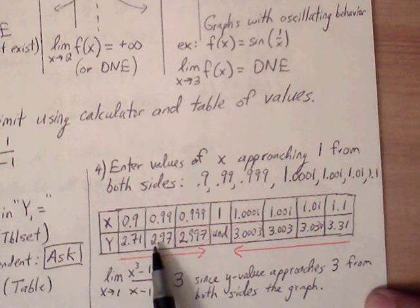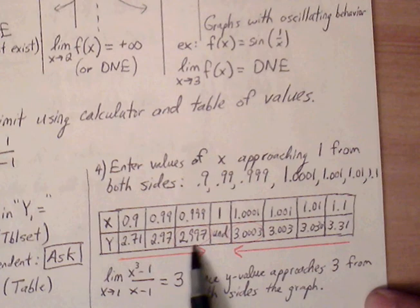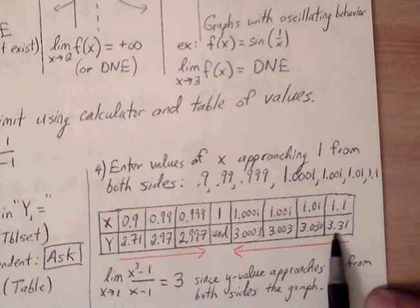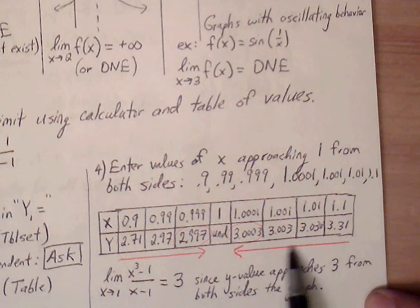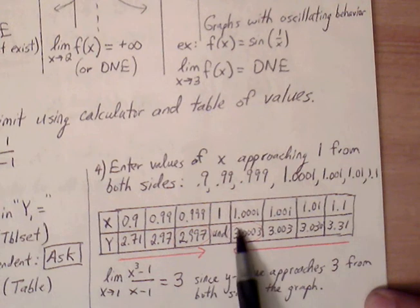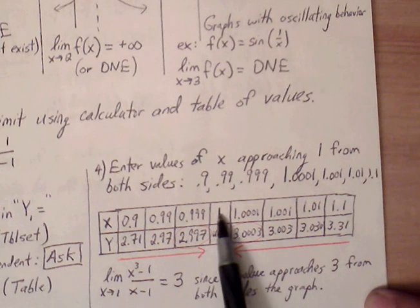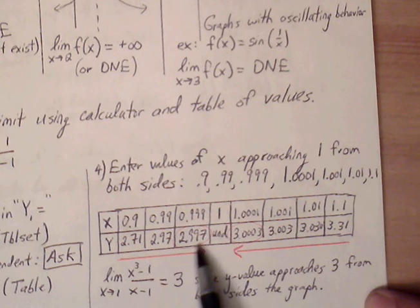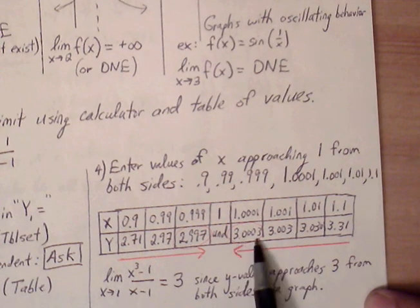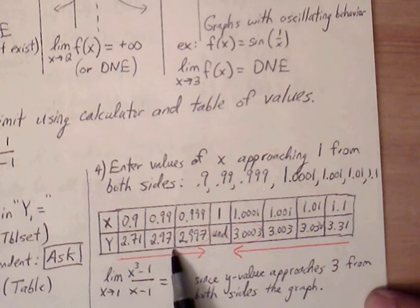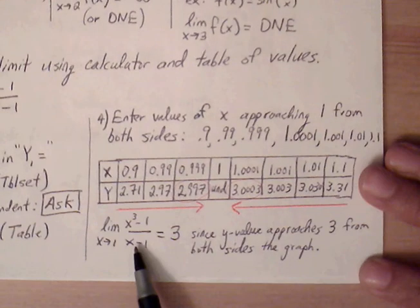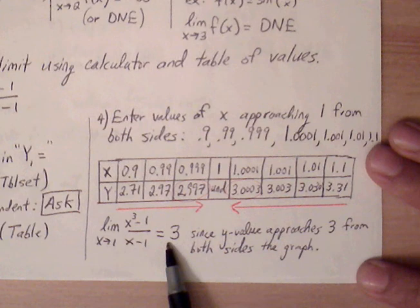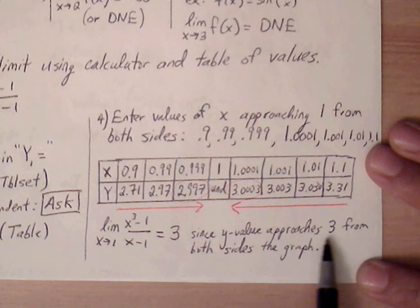The y-values from the left are 2.71, 2.97, 2.997 — approaching 3. From the right side: 3.31, 3.03, 3.003 — also approaching 3. So even though the ordered pair does not exist at 1, we do see the behavior of the graph. This graph is moving towards a y-value of 3 from both sides, so we can say that the limit exists at 3.